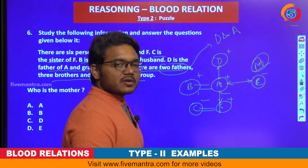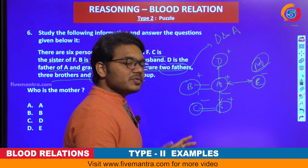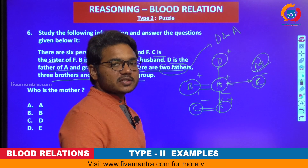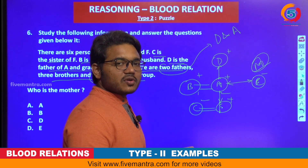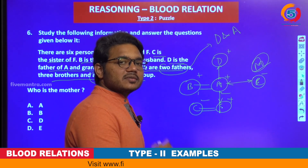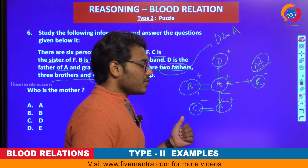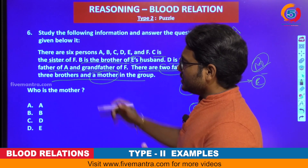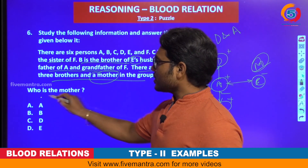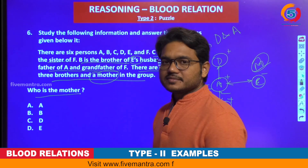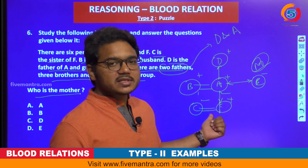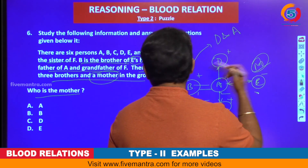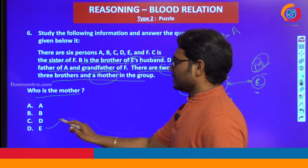In this relationship chart we have now drawn, you need to be careful while drawing the relationship tree. Once you draw it and are certain, you can trace out whatever questions are asked. The first question: who is the mother? While drawing this itself we identified E to be the mother. So the answer is E.